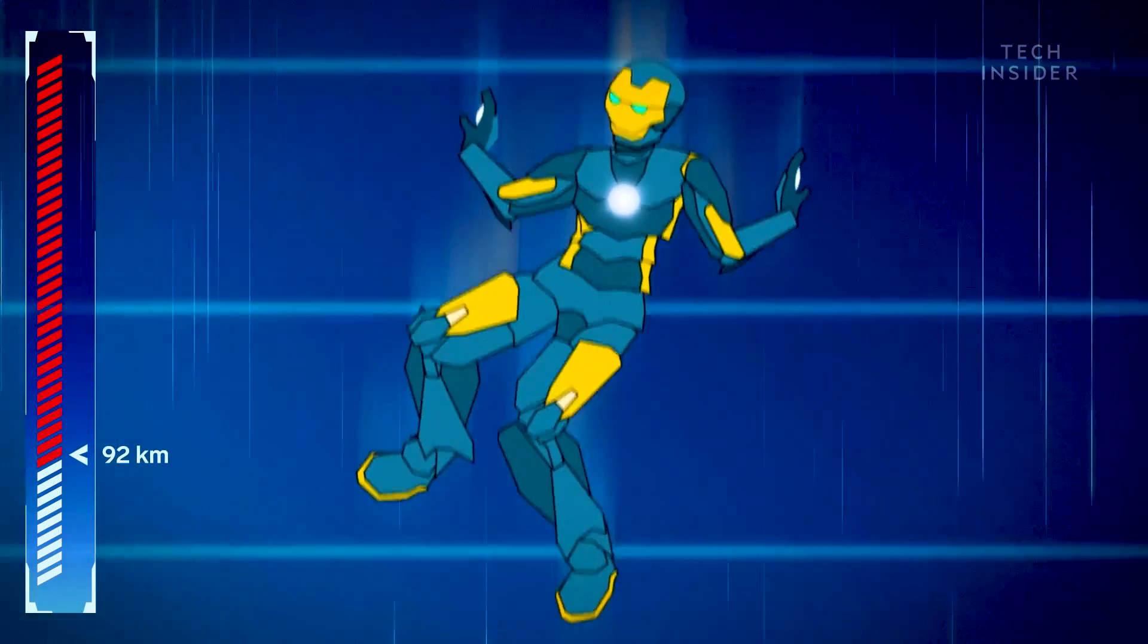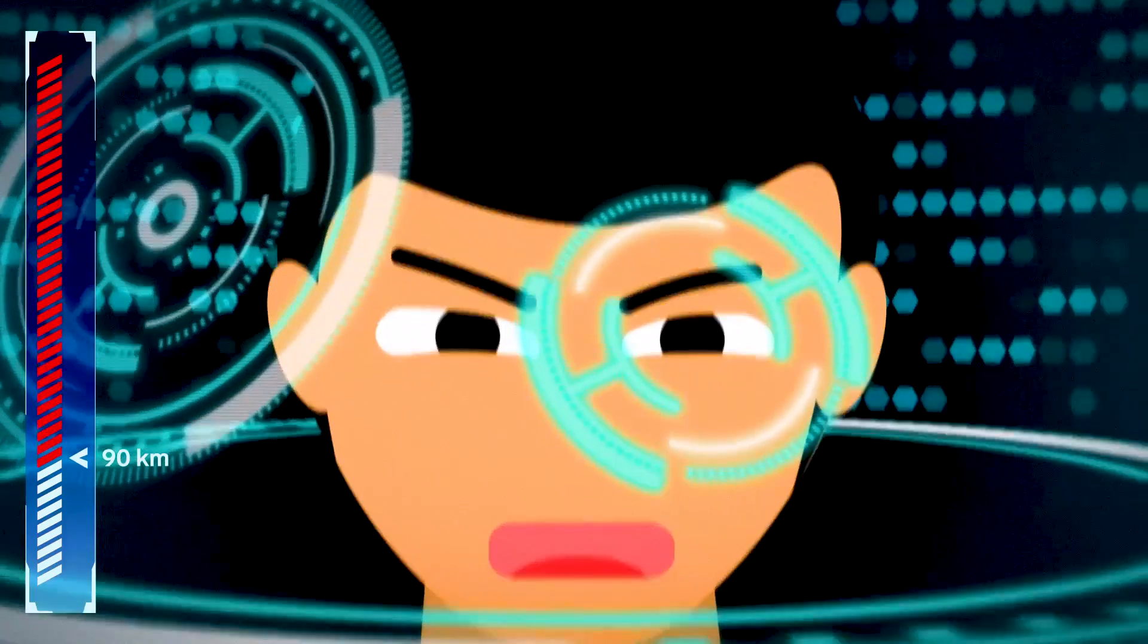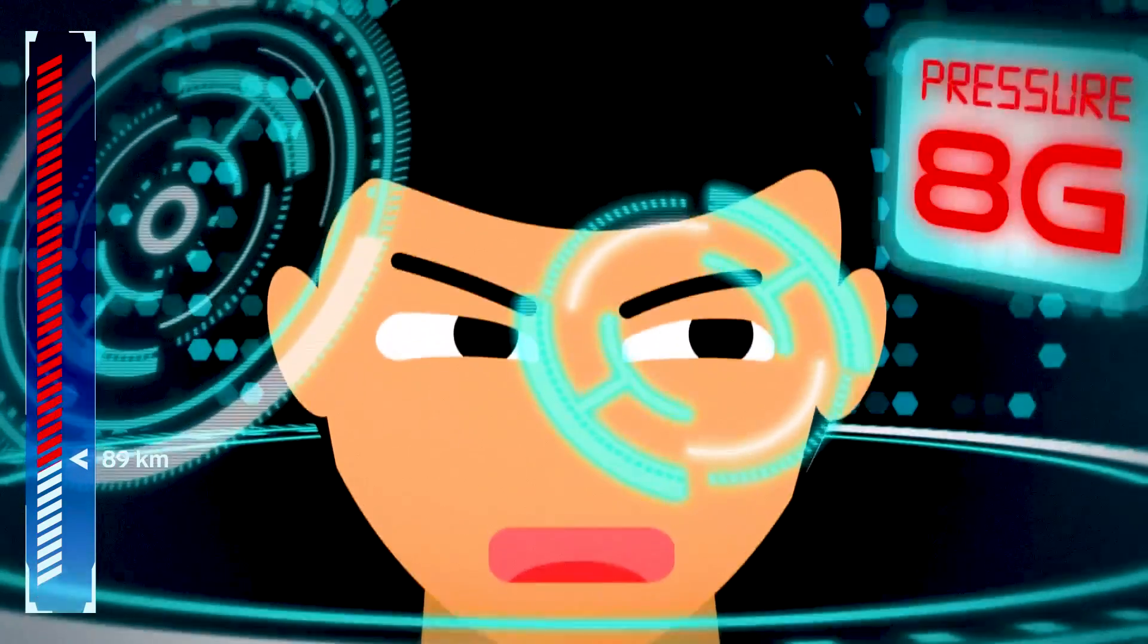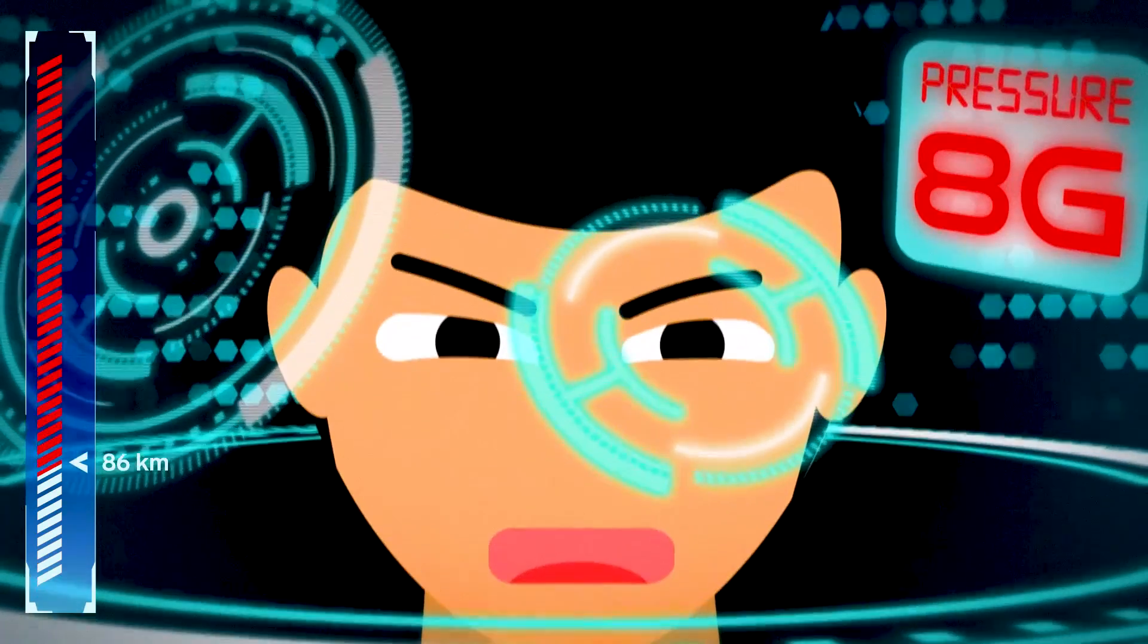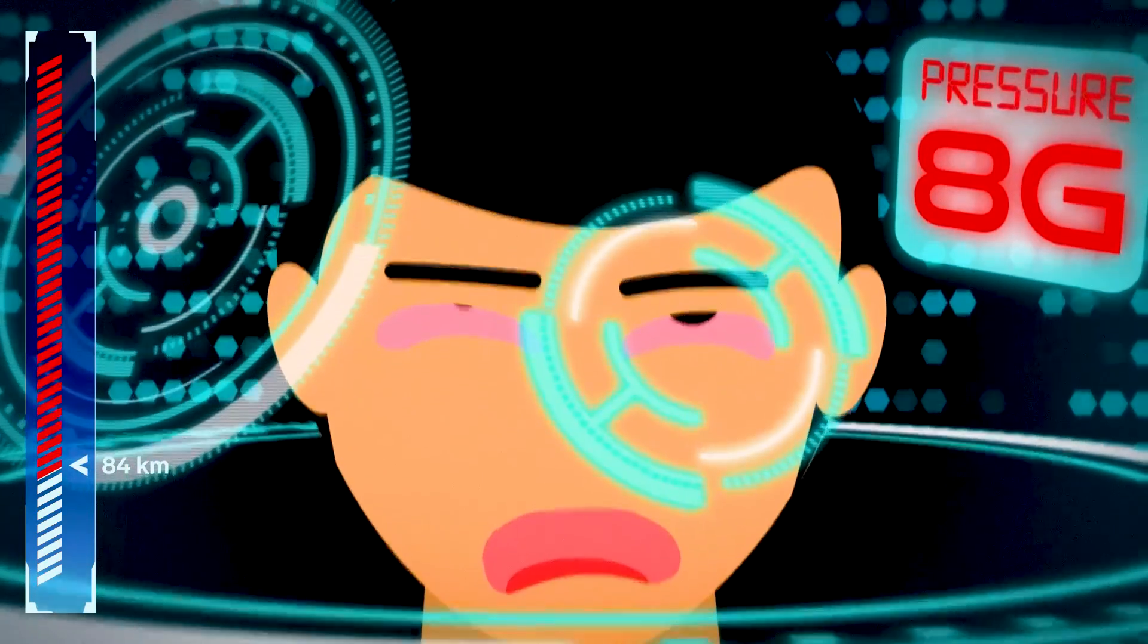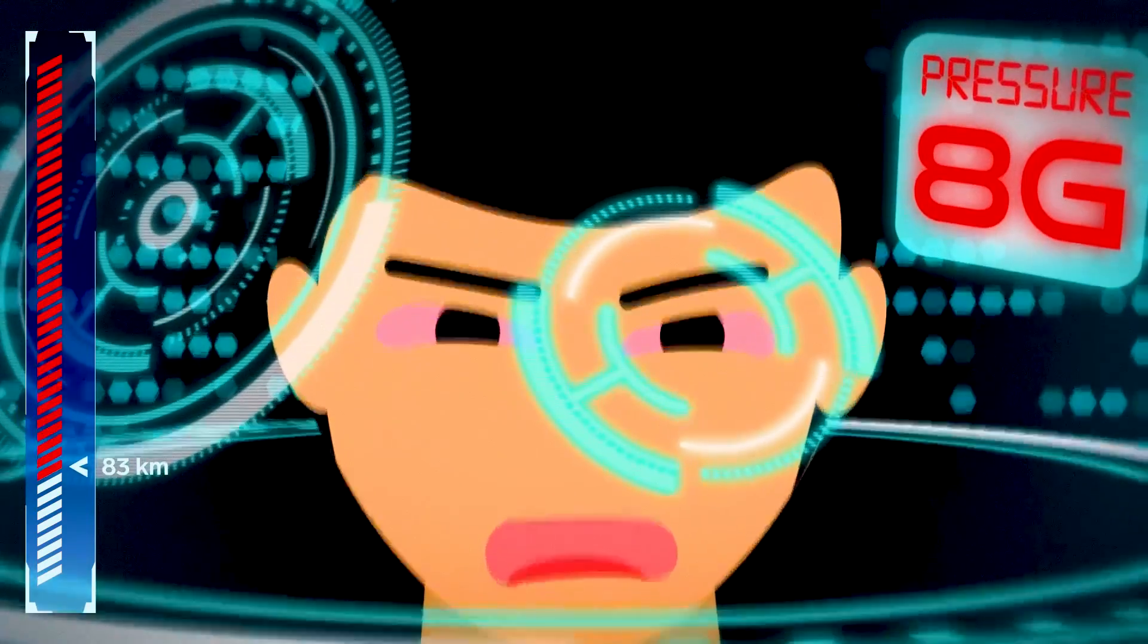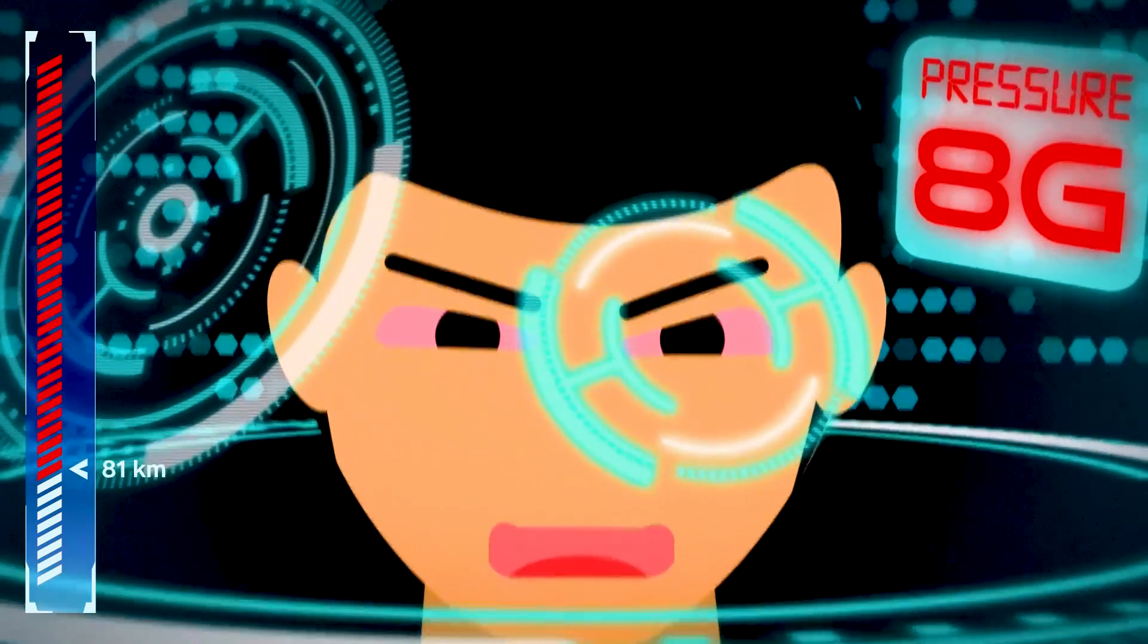Falling through the atmosphere at such breakneck speeds generates at least eight Gs of force. That's eight times the gravity you feel at sea level. And if you're falling feet first, that'll push the blood away from your brain and toward your feet.